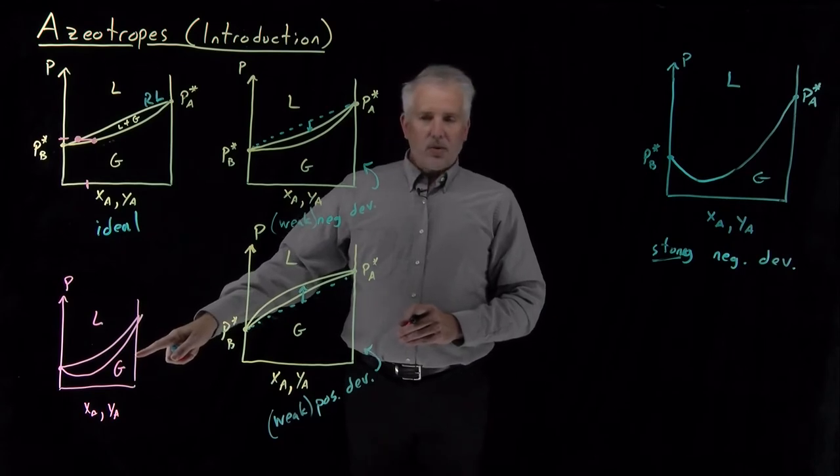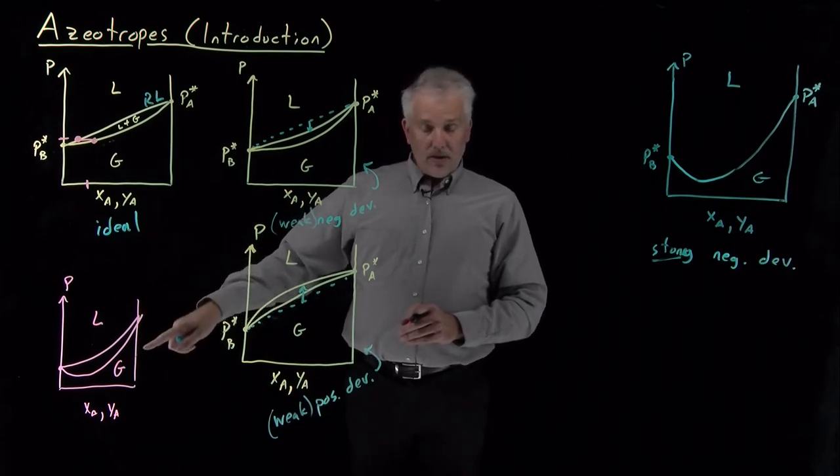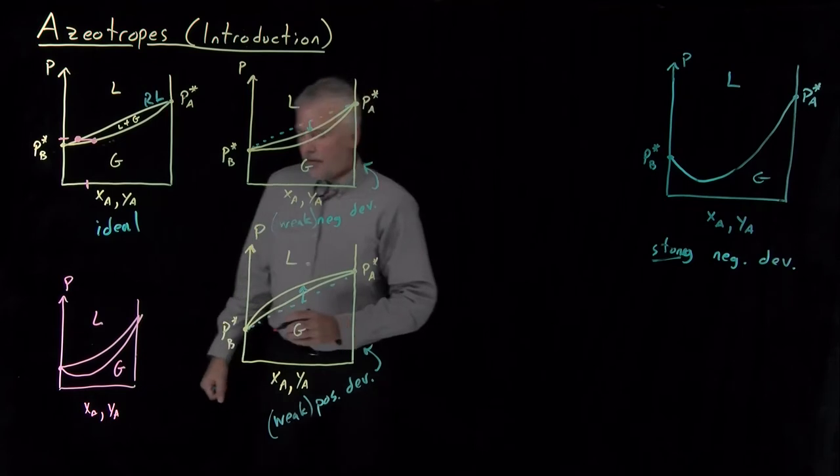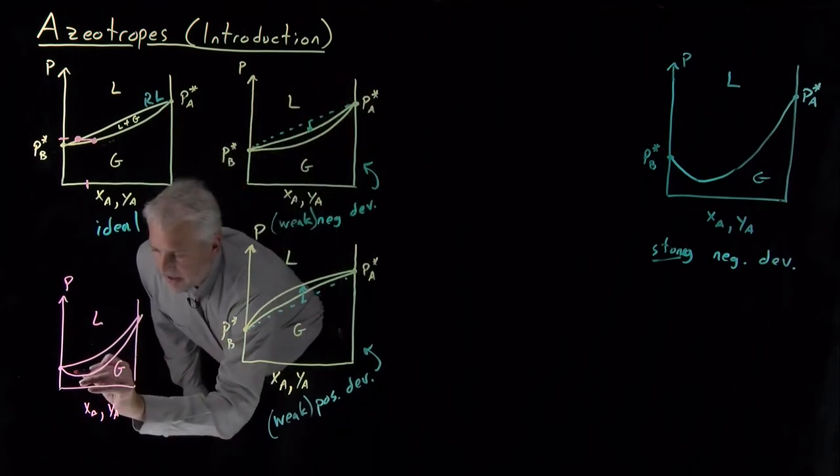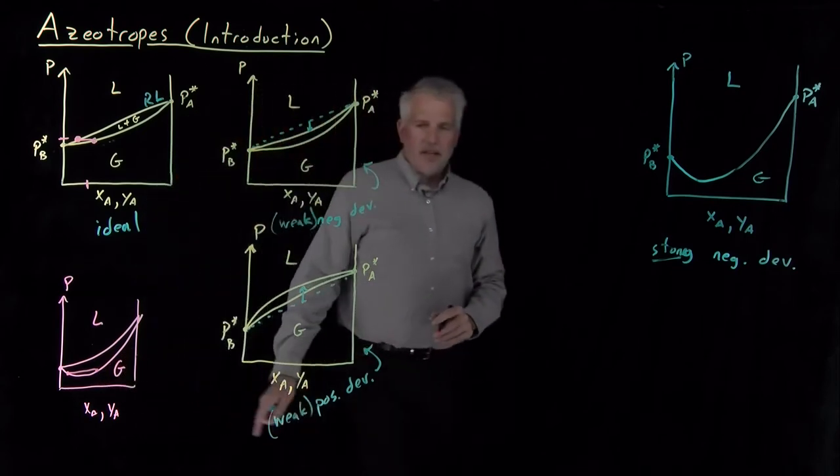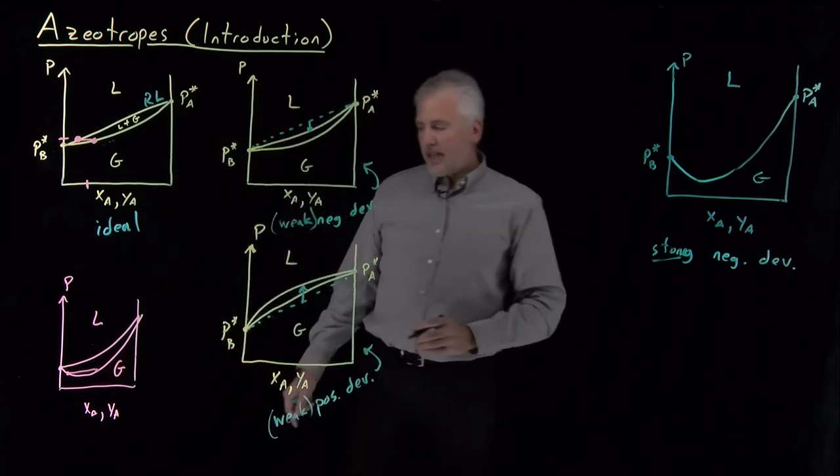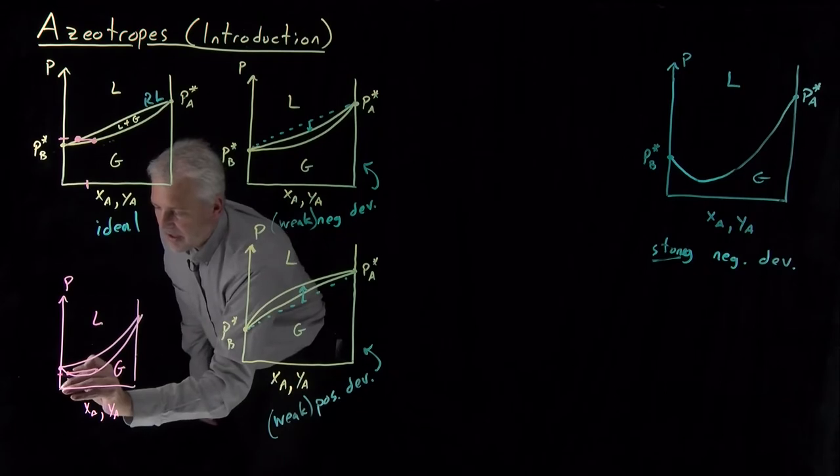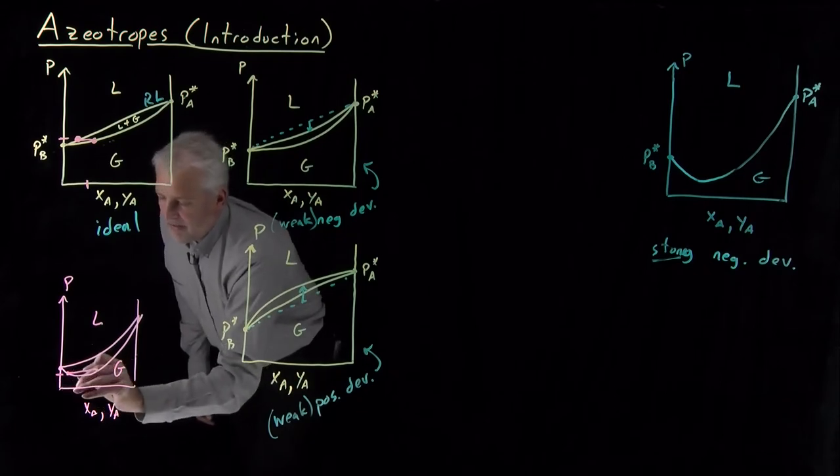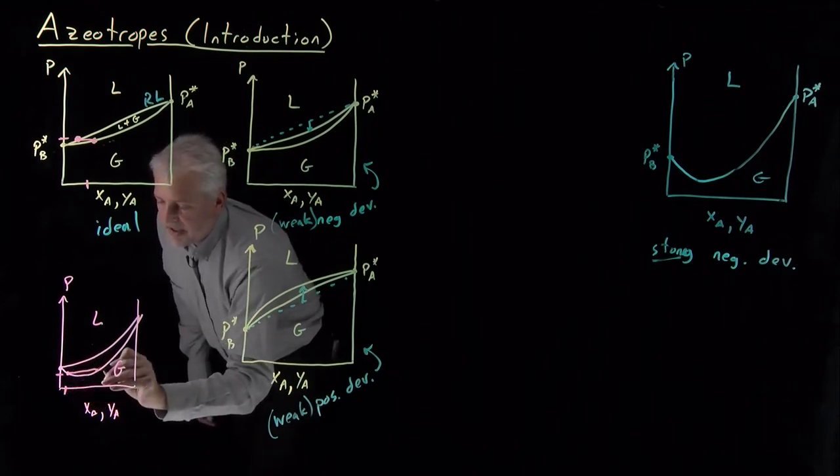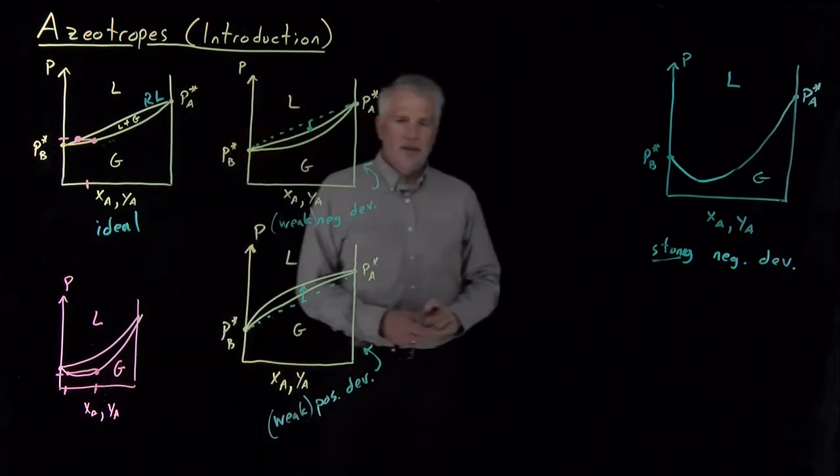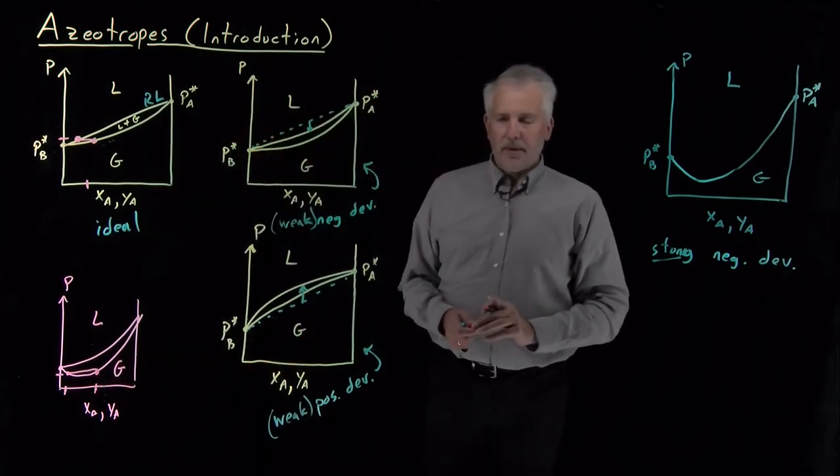Think about what the tie lines would look like for this diagram, this incorrect diagram that I've sketched. If we're at a pressure down here, the tie line connects two gaseous phases. So what that suggests is if I have a pressure, this pressure, I have a gas phase with this concentration in equilibrium with a gas phase at this concentration.